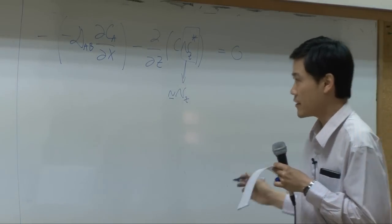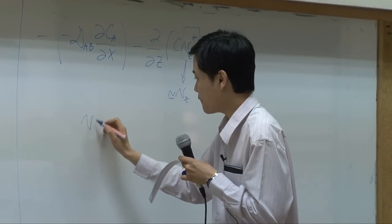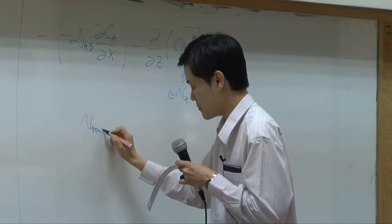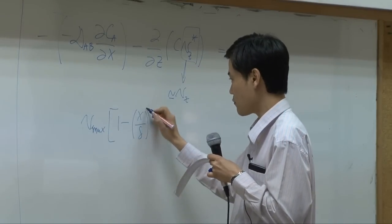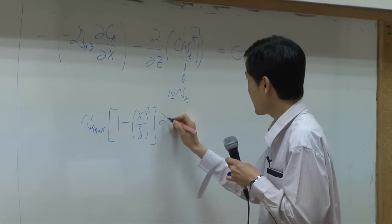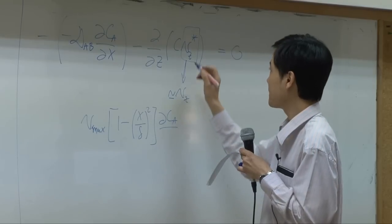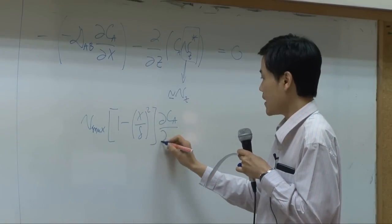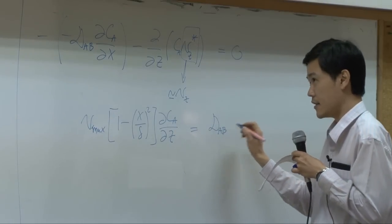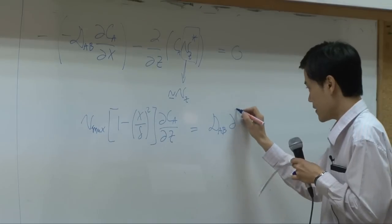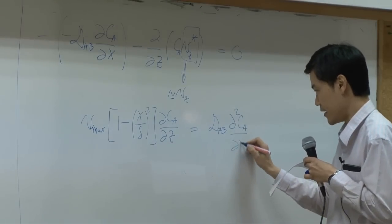So if you rearrange the equation, you will have vc equal to v maximum times 1 minus x over delta squared, dca by dz equal to dab times dca squared by dx squared.